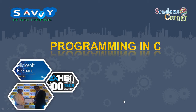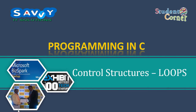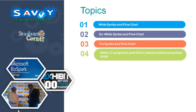Welcome to Savvy IT Solutions. In this video we are discussing loop control structures, video number 2. In the previous video we discussed the background story of loop control structures. In this video we are discussing syntax and flowcharts for while, do-while, and for loops. We are taking one example for explanation: while syntax and flowchart, do-while syntax and flowchart, for syntax and flowchart, and writing a C program to print the first N natural numbers using three loops.